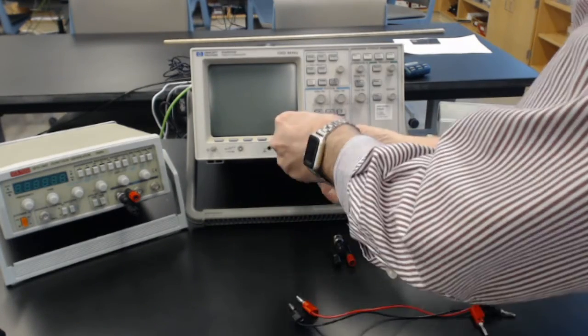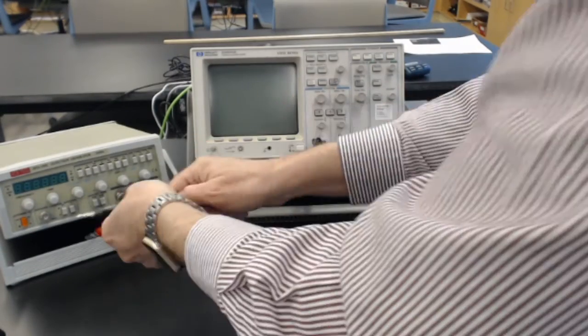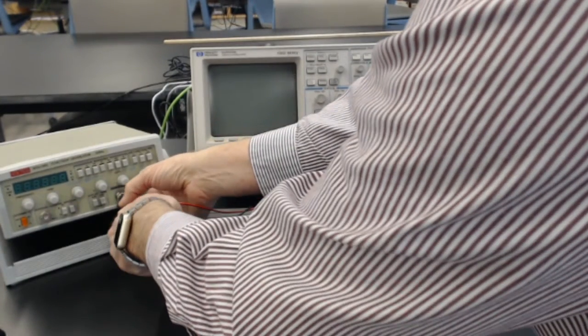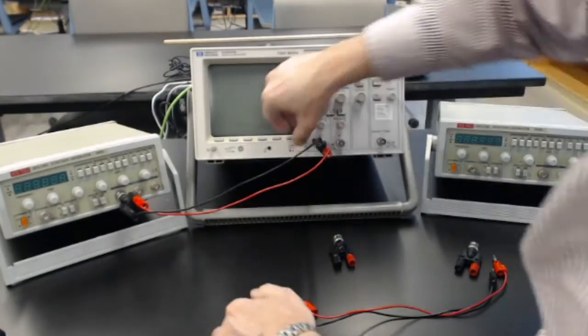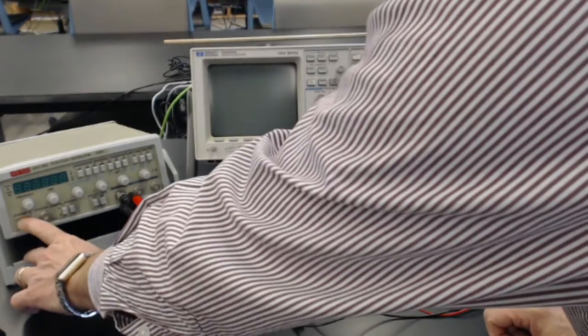So this is what we did before. I've got this input going into the oscilloscope. Let's turn this on, and we'll turn on the function generator.